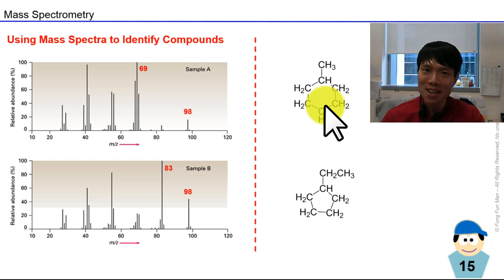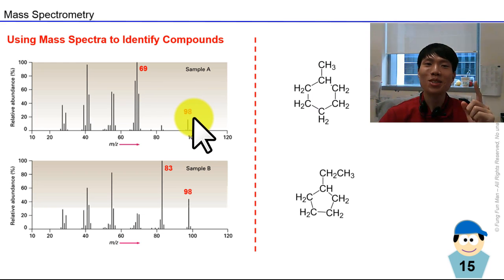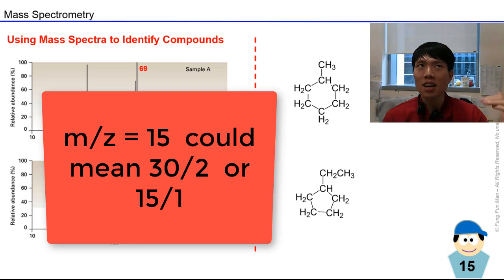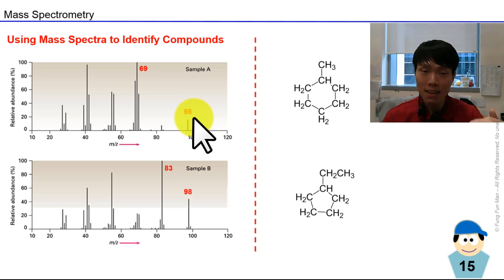There's one more thing to remind you. Sometimes you see 98 - that means the molecular mass is 98, but that's assuming the charge is one. Remember, this is m/z value: mass over charge. I could have 196 divided by 2, which gives 98. What if you have a molecule that's 196 in mass but with a 2+ charge? What appears in the mass spectra is still 98. So be careful about this.